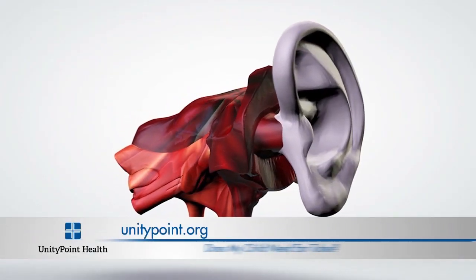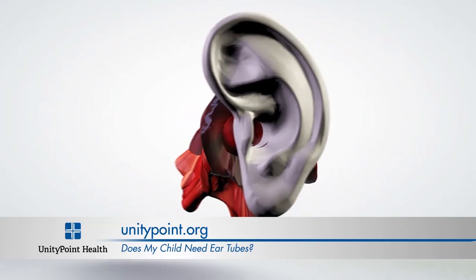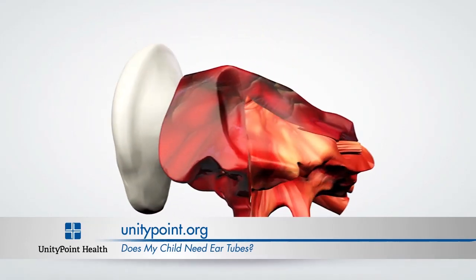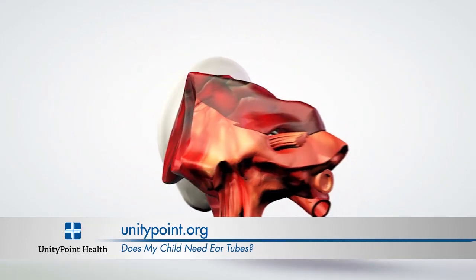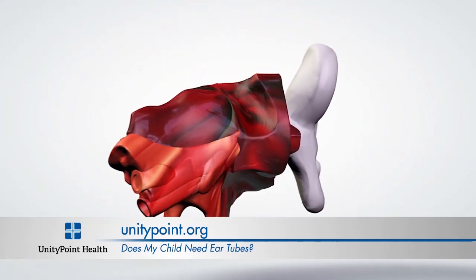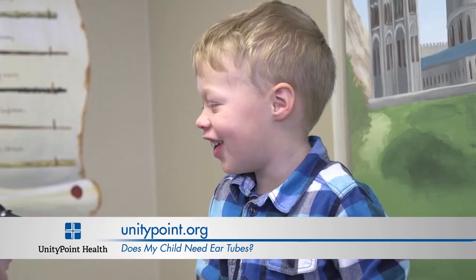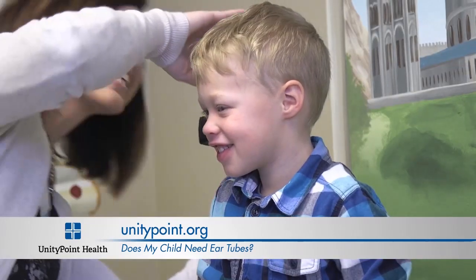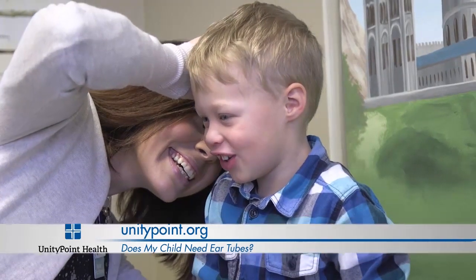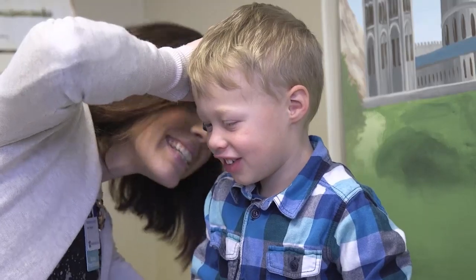When the child is going to have placement of tubes, they will go to the hospital to have those placed surgically by an ear, nose, and throat specialist under anesthesia. Generally, the procedure is very brief and the child will go home shortly thereafter.